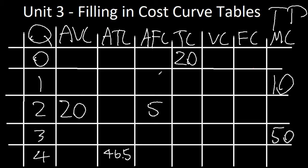The first thing you want to do when approaching this type of question is get the easy rows out first. We know that anything that relies on quantity in row zero, you automatically can't even calculate, as it's impossible to divide by zero.